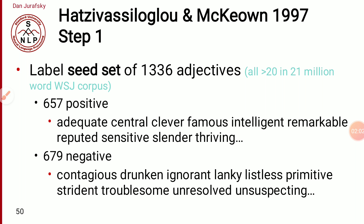In this method they had 1336 adjectives as a seed set, where 557 were positive words and 679 were negative words. For example, positive adjectives included: central, famous, intelligent, remarkable, sensitive, slender, and three-wings. Negative adjectives included: drunken, lanky, listless, primitive, strident, troublesome, and unresolved.